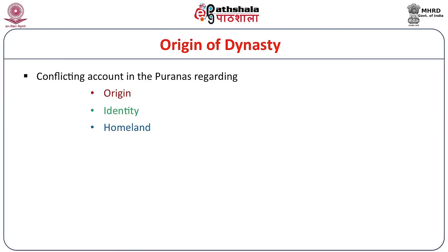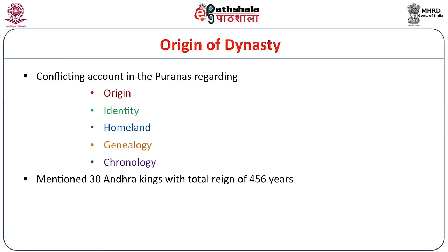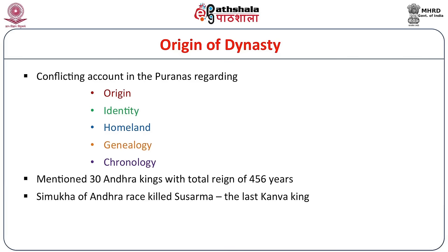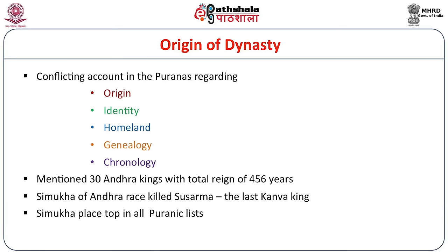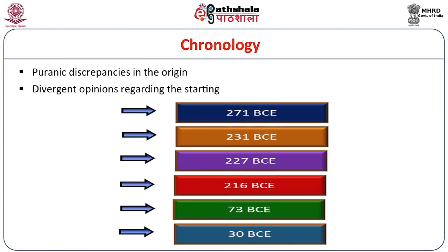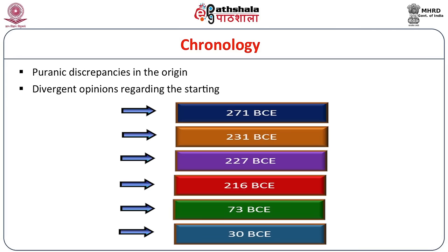The information is somewhat scanty because of divergent theories about their origin, identity, homeland, genealogy, and chronology. From the Puranas, it is mentioned that 30 Andhra kings ruled with a total reign of 456 years. Simuka of the Andhra race killed Sushyarma, the last Kanva king. In all the Puranas, Simuka is placed at the top of the list. Divergent opinions exist among historians to determine the starting point of Shatavahana history.